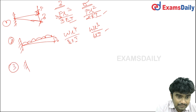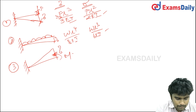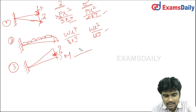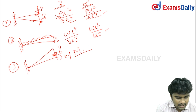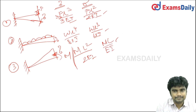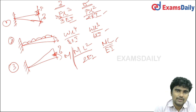For the third case — a cantilever beam with an applied moment M at the free end — the deflection formula is ML²/2EI, and the slope formula is ML/EI. These are the deflection and slope formulas for a moment applied at the free end of a cantilever.